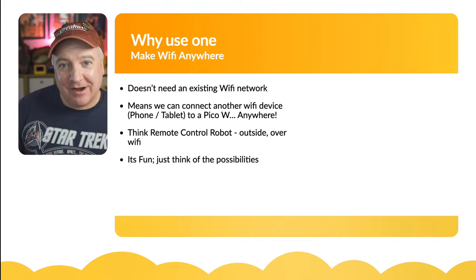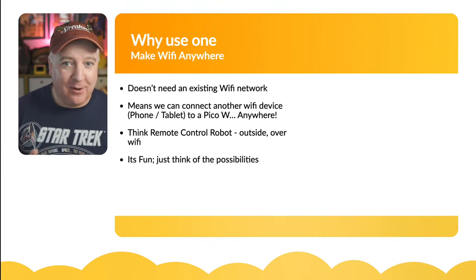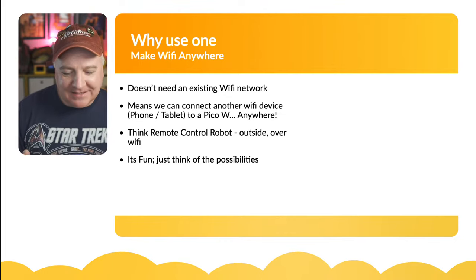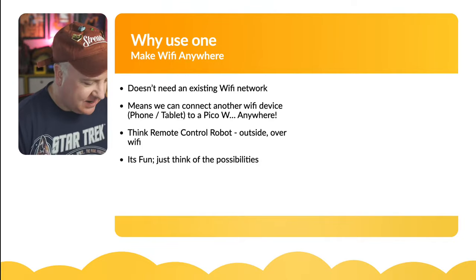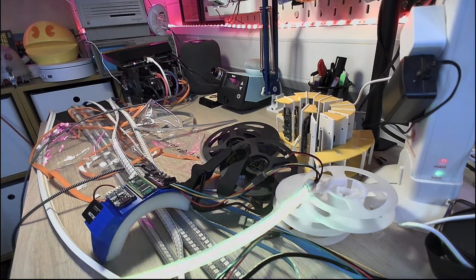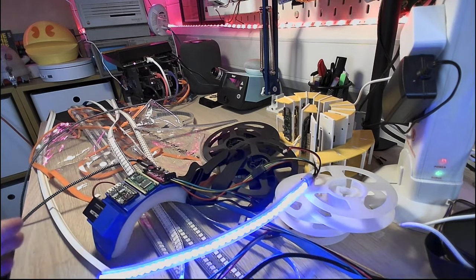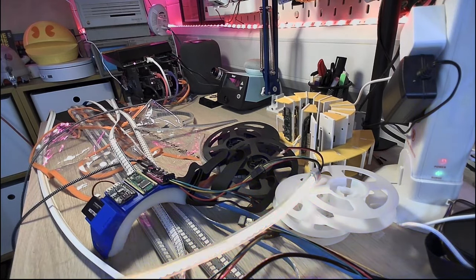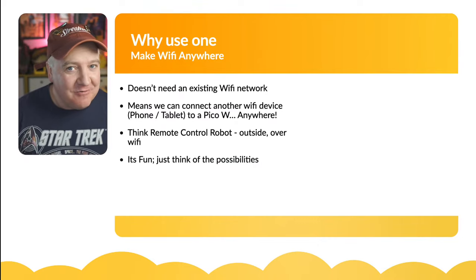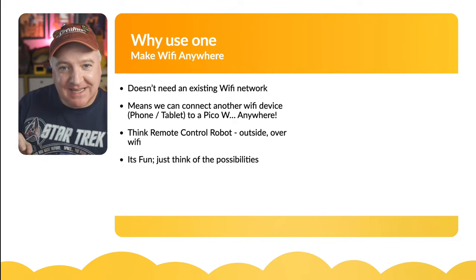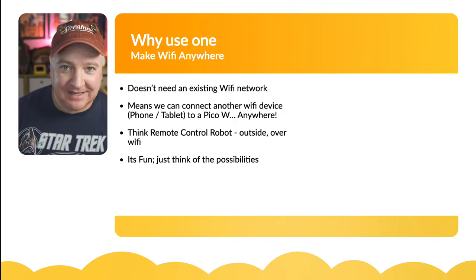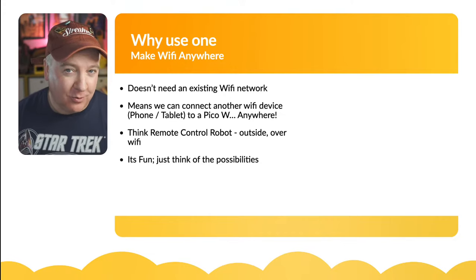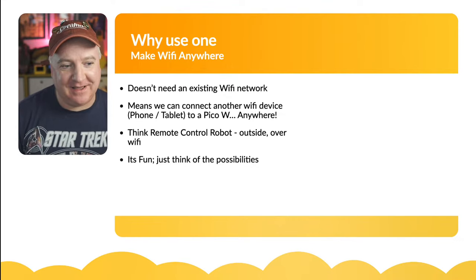With an access point, you can connect anywhere — to a phone, tablet, or another Pico W — wherever you want, battery powered. Think remote control robot outside of Wi-Fi range. What I have in mind is making a raincoat for my dog that I can control over Wi-Fi from my phone. I can type in some text and have it scroll using a matrix of RGB LEDs, display colors, and all that — while I'm walking the dog, away from my home network. The possibilities are literally endless.